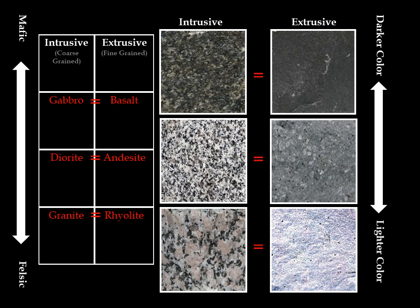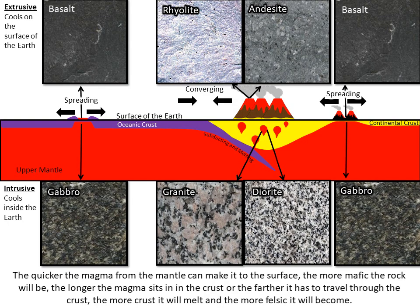So let's merge the rocks with the diagram we saw earlier. Let's start with the spreading centers. At the spreading centers, you can see that the mantle, which is mafic in composition, is really close — practically at the surface of the earth. As a result, any rocks that would form from magmas here would be mafic in composition. If the magma cools slowly under the surface of the earth, one would expect a gabbro to form, where if it flowed out onto the surface and cooled, one would expect a basalt.